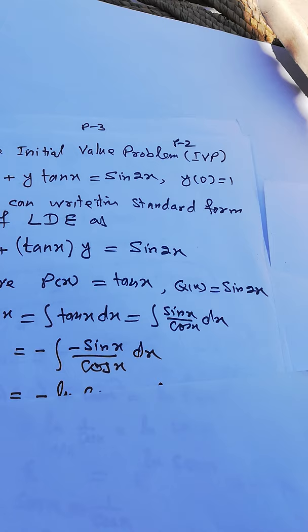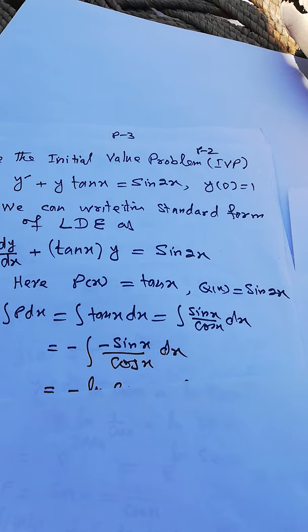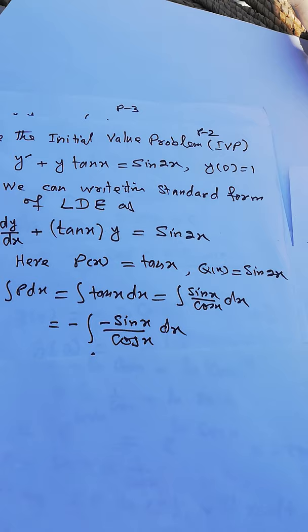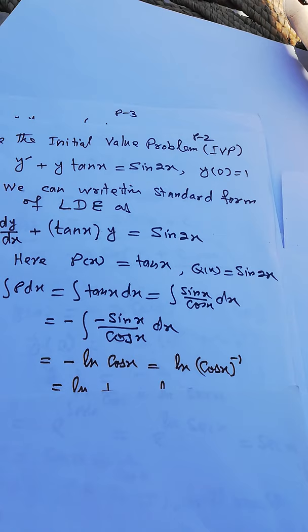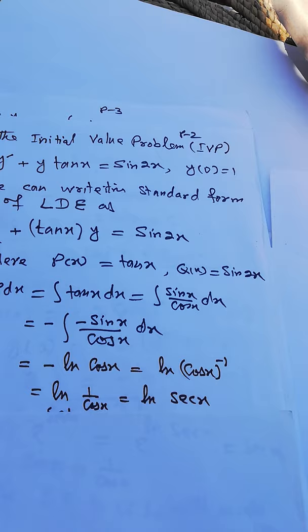Since the derivative of cos x is minus sine x, we multiply and divide by negative one: minus integral of minus sine x over cos x dx. Applying the formula gives minus ln|cos x|, which equals ln|cos x| raised to the power minus one, or ln(1/cos x), which equals ln(sec x).